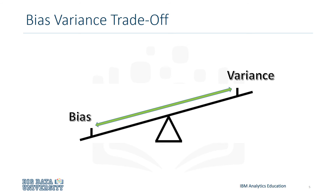Since bias and variance are at two ends of the spectrum — one being able to cause overfitting and the other causing underfitting — you want to keep them at a good balance. If you create an overly complex model that matches exactly what you model for, you overfit the data, which will not generalize to out-of-sample data. Similarly, you don't want to underfit the data and have it be too general. A good balance is keeping the model general enough for out-of-sample data, but specific enough to fit the pattern of the data.